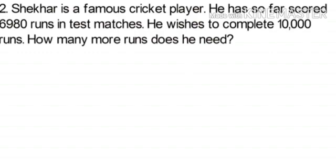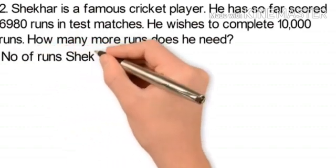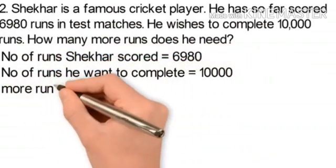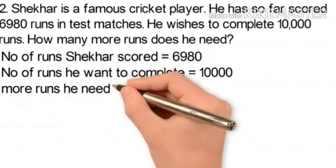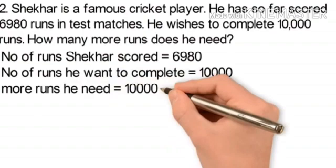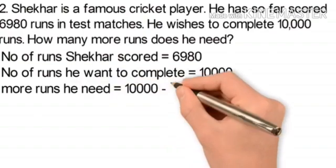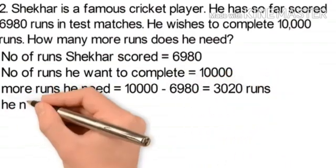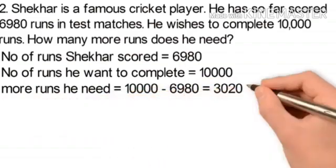Shaker wishes to complete 10,000 runs but has so far scored 6980 runs. Number of runs Shaker scored equals 6980. Number of runs he wants to complete equals 10,000. More runs he needs equals 10,000 minus 6980, which equals 3020 runs. Therefore he needs 3020 more runs.